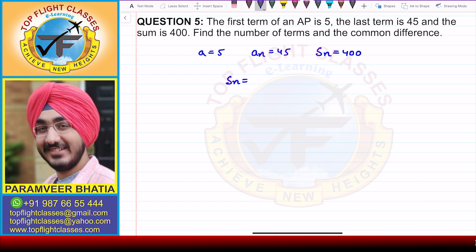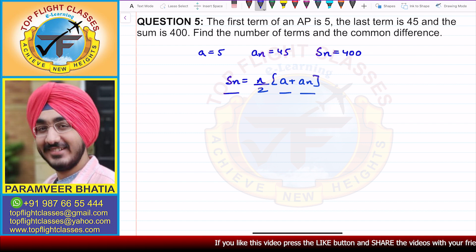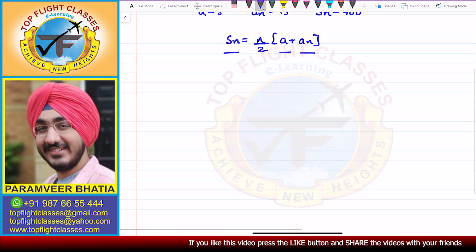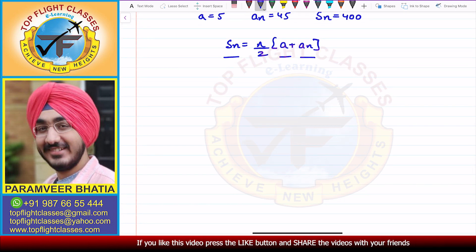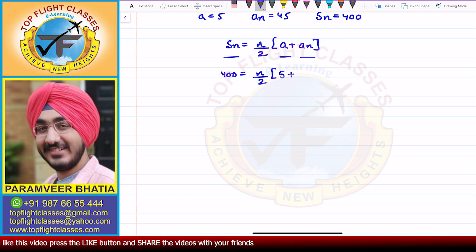Now the sum of terms can be written as n by 2 times (a plus an). Here we have a given and an given, so we can find the n value. On putting the values, Sn is given as 400, a is equal to 5, and an is 45.